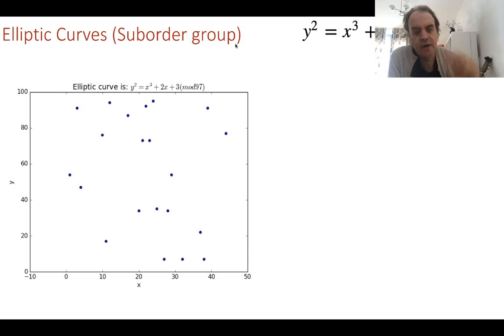The suborder group is important because the suborder group defines the number of times that we can add a certain point before it cycles round again. Obviously if that's a low value, then we have low security. If it's a high value, then we have good security because we have lots of points.